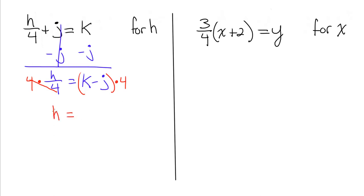On the right, we can write h equals four times k minus j. If you want, you can go the extra step of distributing, so h equals four times k, which is 4k, and four times negative j is negative 4j.